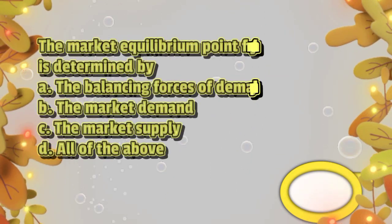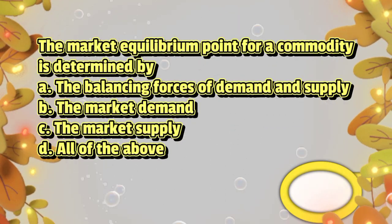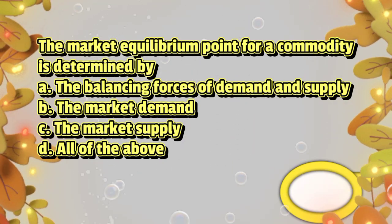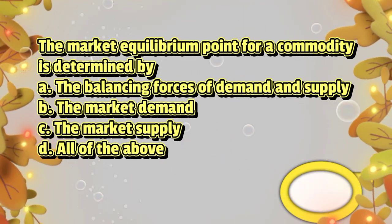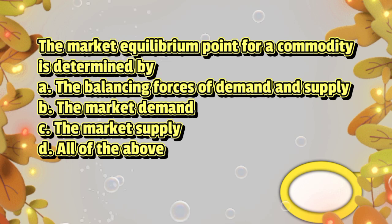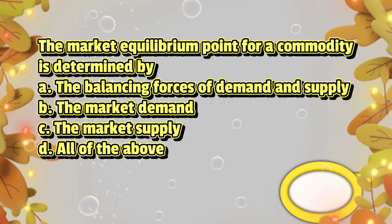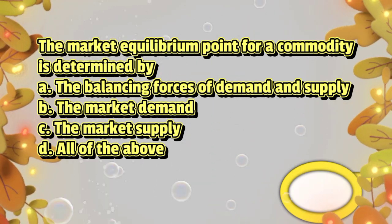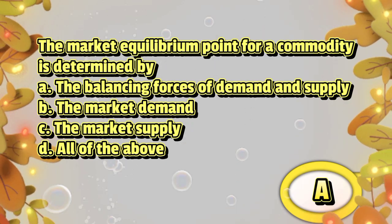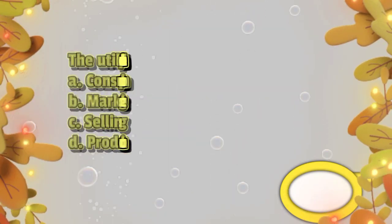The market equilibrium point for a commodity is determined by. A. The balancing forces of demand and supply. B. The market demand. C. The market supply. D. All of the above. The answer is letter A.